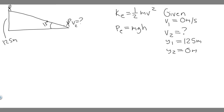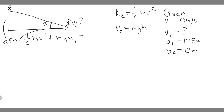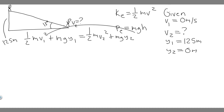Now we take each of these and set them equal. It'll be: one-half m v₁ squared plus mg times y₁ equals one-half m v₂ squared plus mg times y₂. Once we have it like this, we can solve for v two. We just plug in the variables.